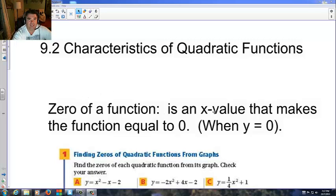Zero of a function is an x-value that makes the function equal to 0. In other words, when y equals 0, that would be your x-intercept, so where it crosses the x-axis.